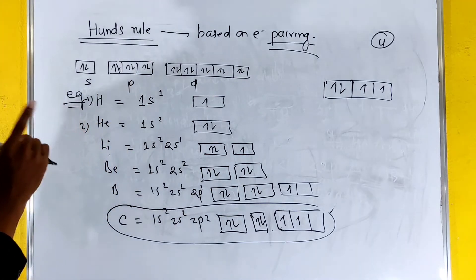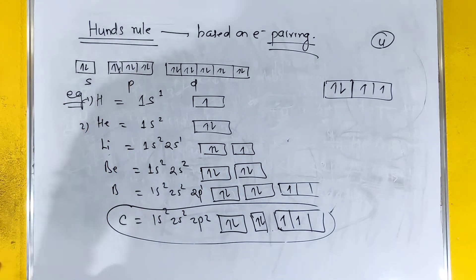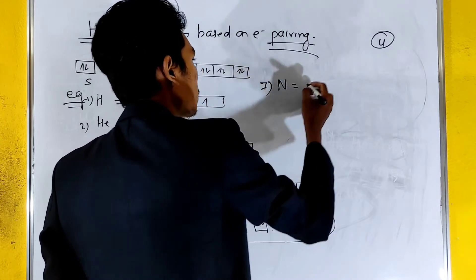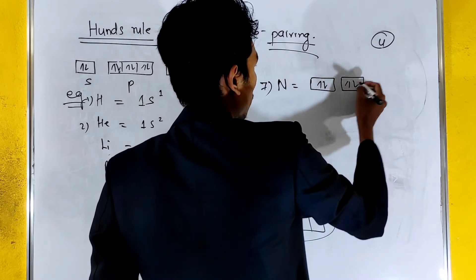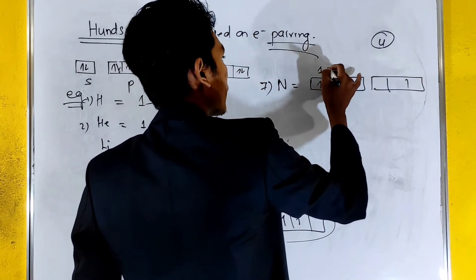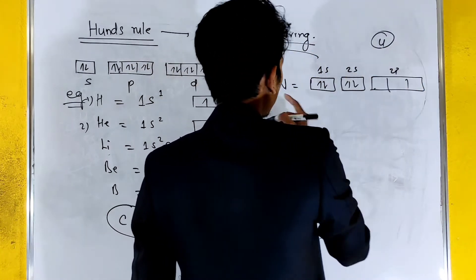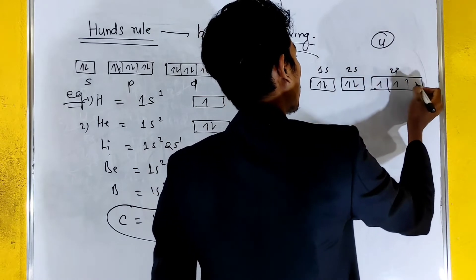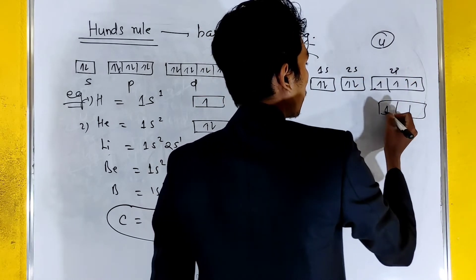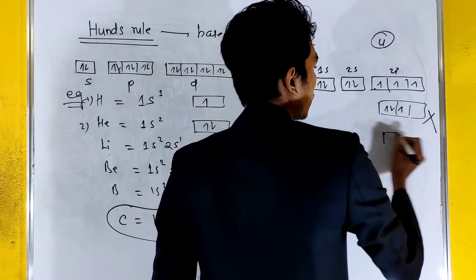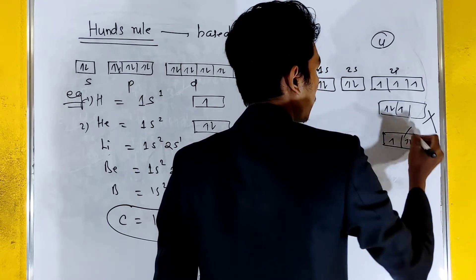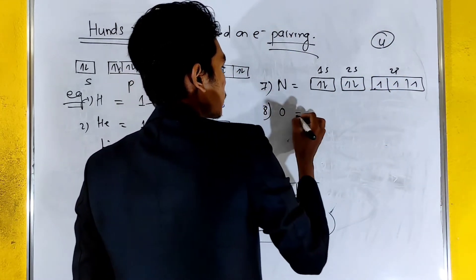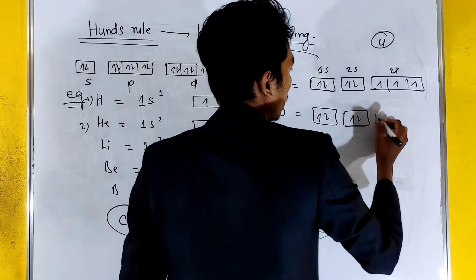Suppose we consider Nitrogen with atomic number 7. We have 7 electrons: 1s², 2s², 2p³. In the 2p subshell, we place electrons one at a time — 1, 2, 3. This follows Hund's rule: electrons fill singly with parallel spin before any pairing occurs. This is Hund's Rule of Maximum Multiplicity.